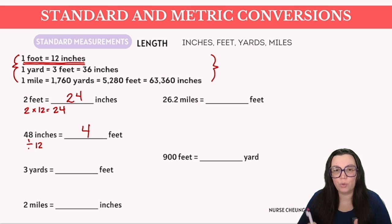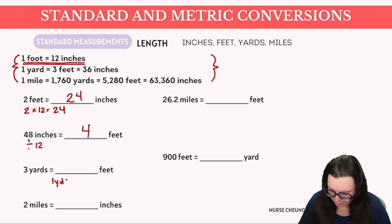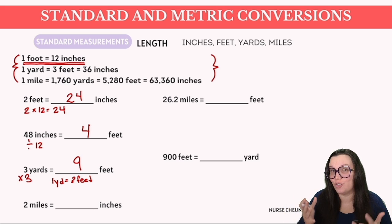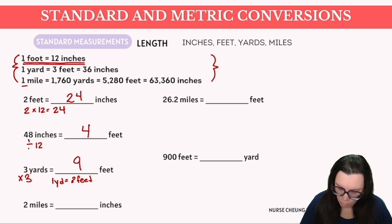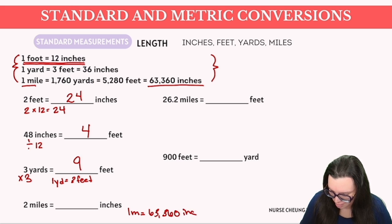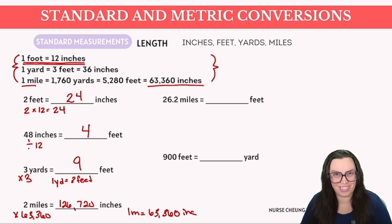For three yards to feet: we're going from a larger unit to a smaller unit, so we multiply. One yard equals three feet, so three yards times three gives us nine feet. For how many inches are in two miles: one mile equals 63,360 inches, so two miles times 63,360 gives us 126,720 inches.